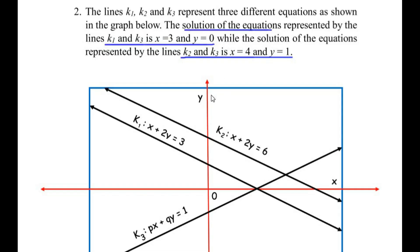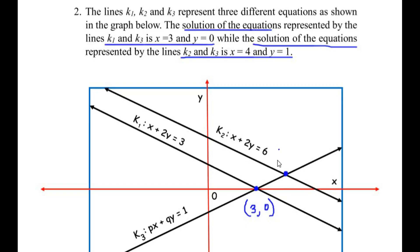The solution of an equation represents the point where the lines meet each other. k1 and k3 meet on the x-axis at the coordinate (3, 0). Similarly, k2 and k3 intersect at the point with coordinate x=4 and y=1. Using these two ordered pairs we are going to find the equation of line k3.